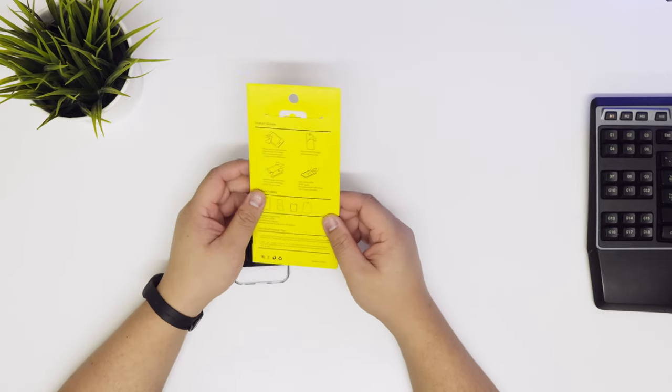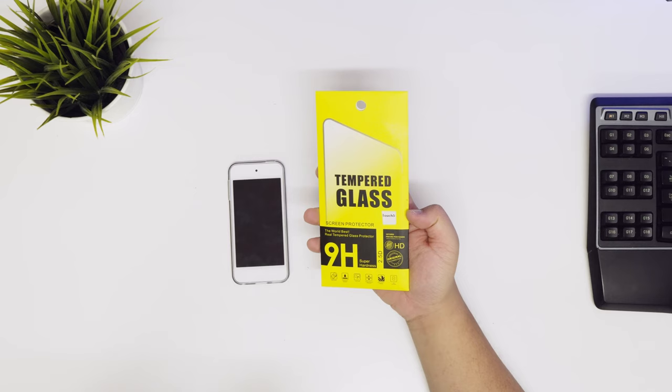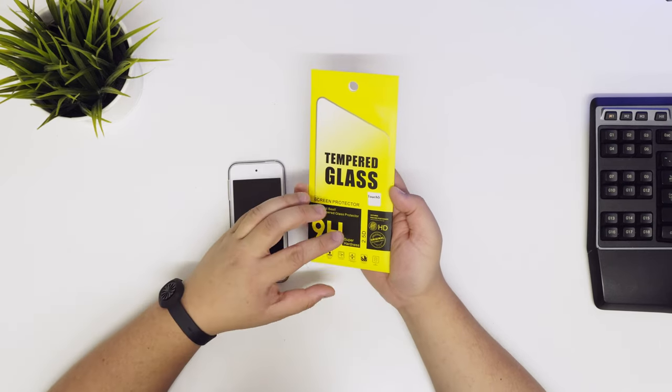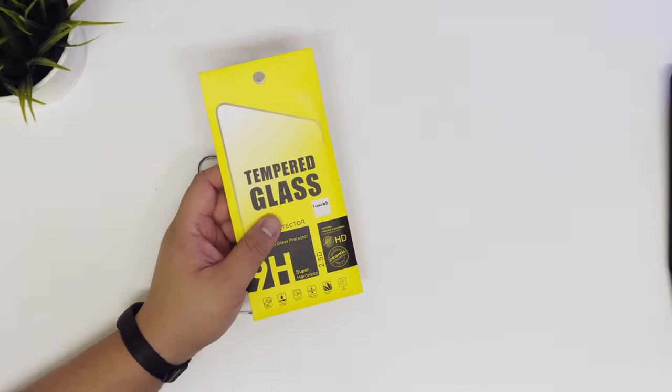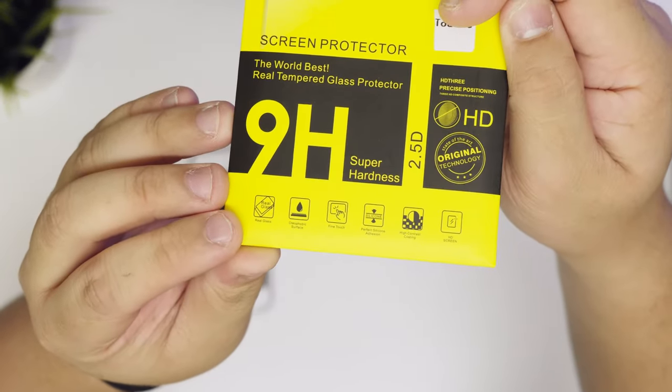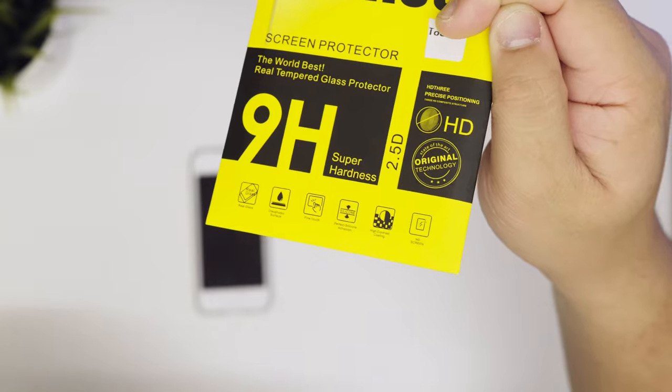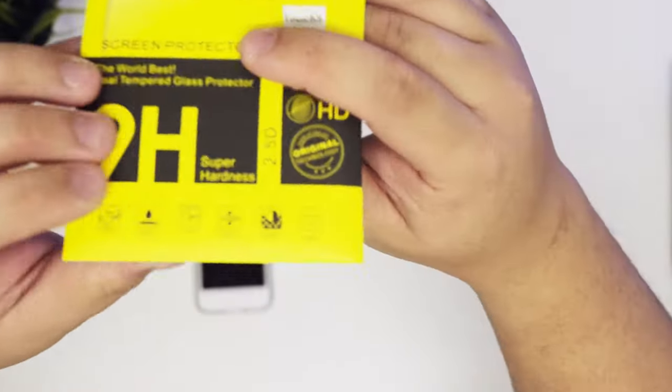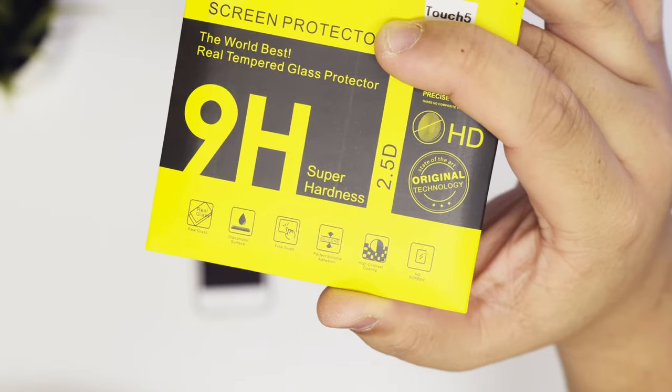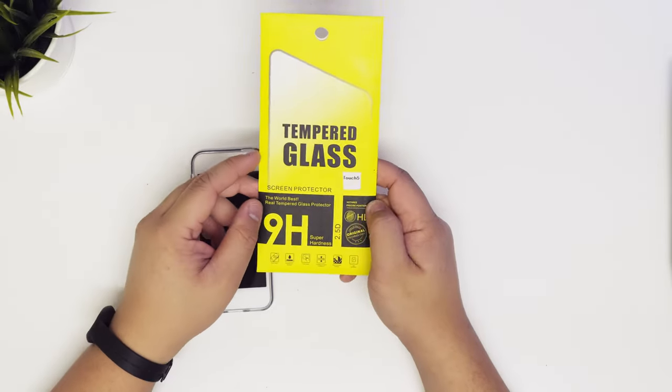Let's get to it. I'll leave a link in the description for this particular screen protector. It's a tempered glass. It's 9H hardness, so it will resist most things that will be in your pocket and stuff like that. You've got real glass, non-liquid attractive surface, fine touch, perfect silicone adhesion, high contrast and HD screen. And it's also 2.5D, which means that the glass does curve and it curves really well.